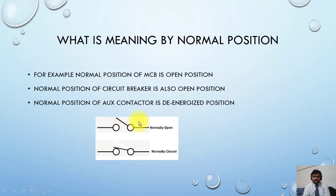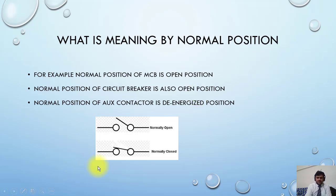For example, the normal position of an MCB is the open position. You must have seen an MCB — the drawing shows the MCB has two positions: one is open and one is closed. As per the drawing, the open position of the MCB is the normal position. If the MCB is open, this contact will be open.